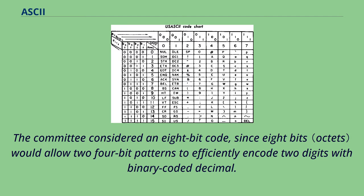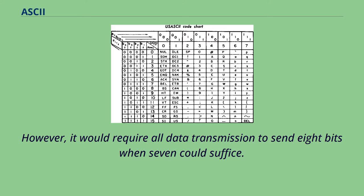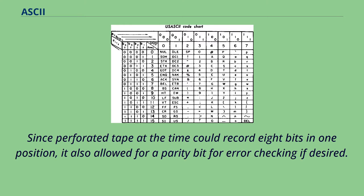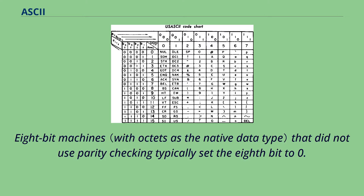The committee considered an 8-bit code, since 8 bits would allow two 4-bit patterns to efficiently encode two digits with binary-coded decimal. However, it would require all data transmission to send 8 bits when 7 could suffice. The committee voted to use a 7-bit code to minimize costs associated with data transmission. Since perforated tape at the time could record 8 bits in one position, it also allowed for a parity bit for error checking if desired. 8-bit machines that did not use parity checking typically set the 8th bit to 0.